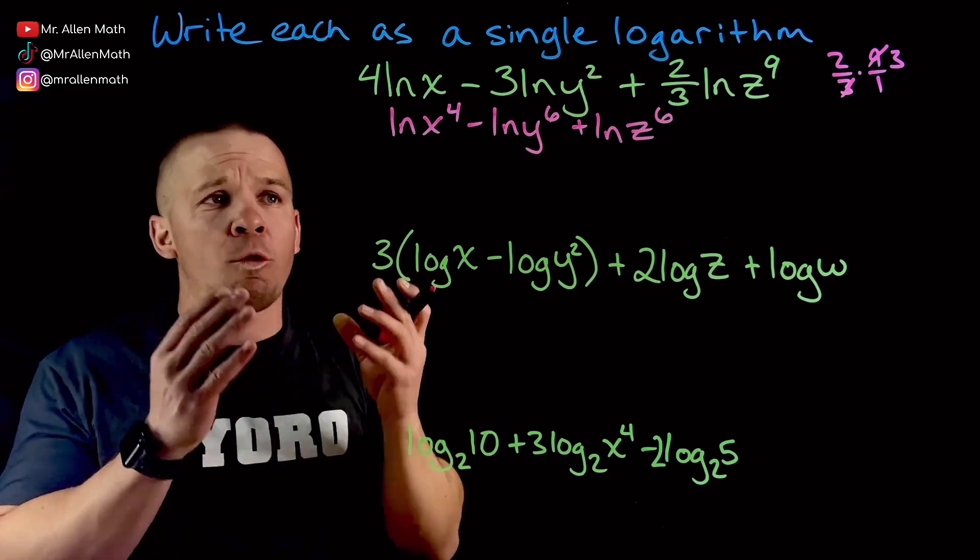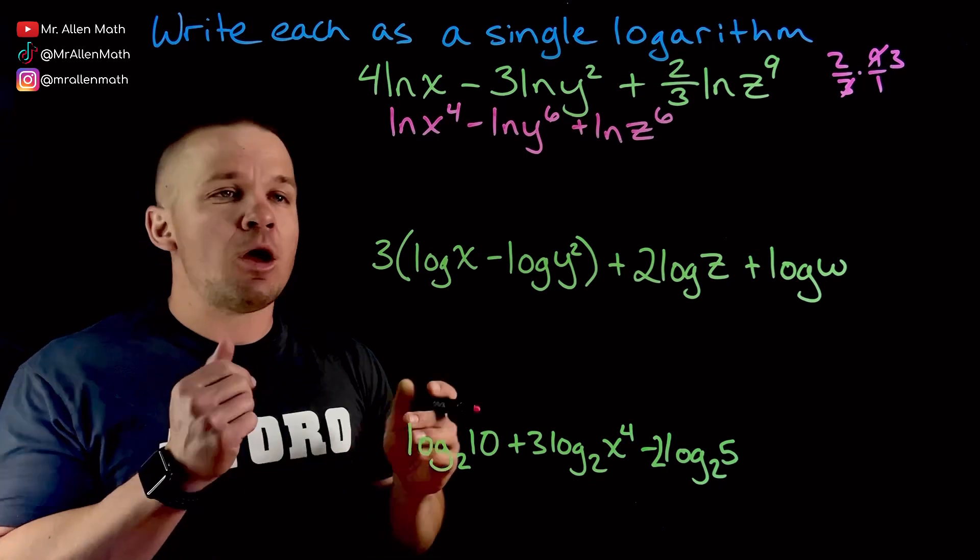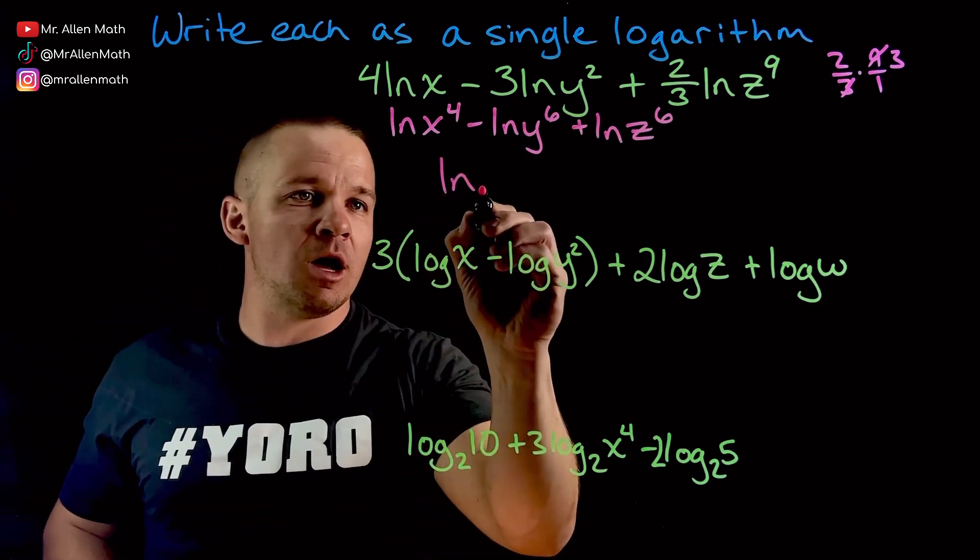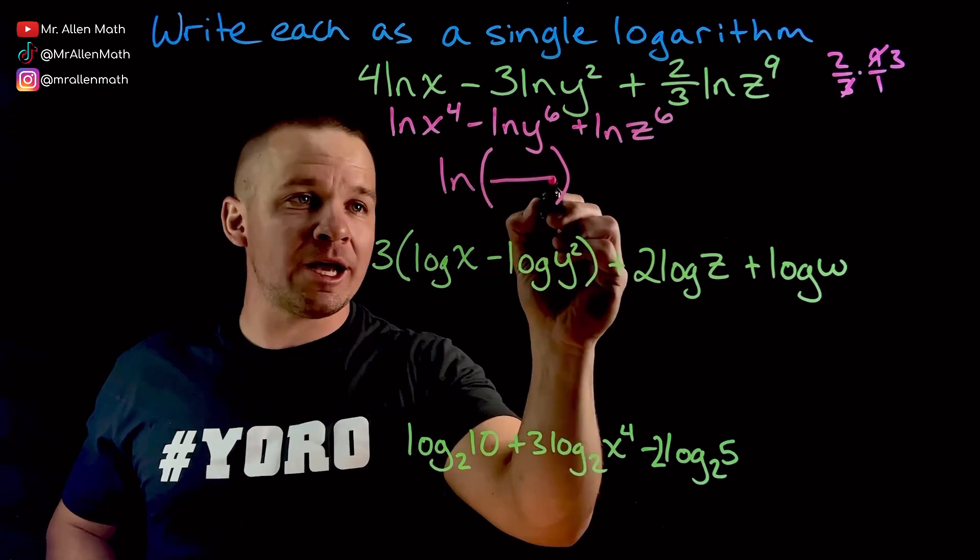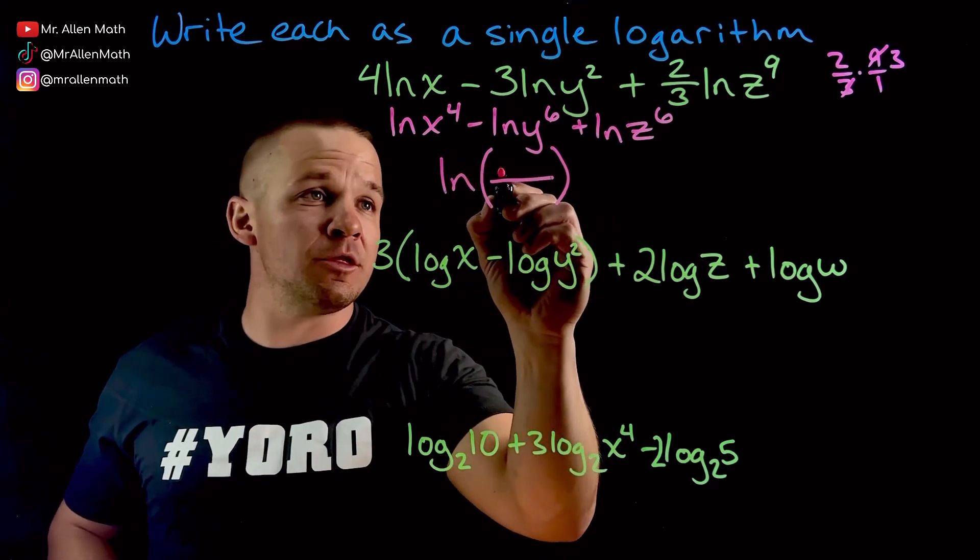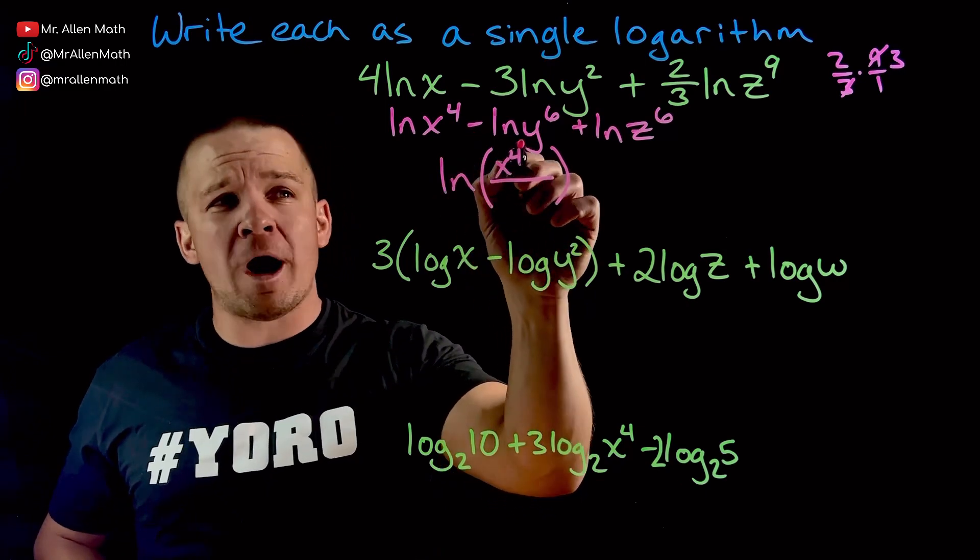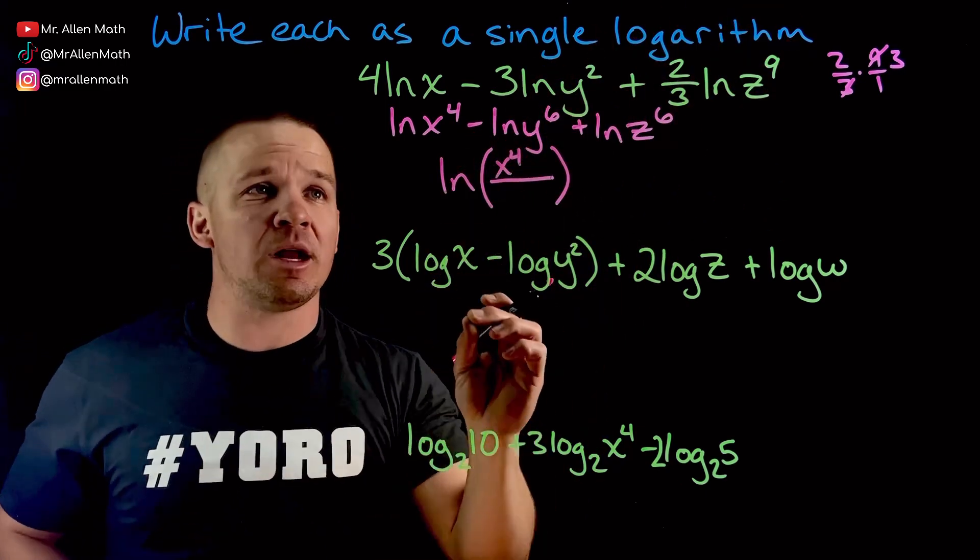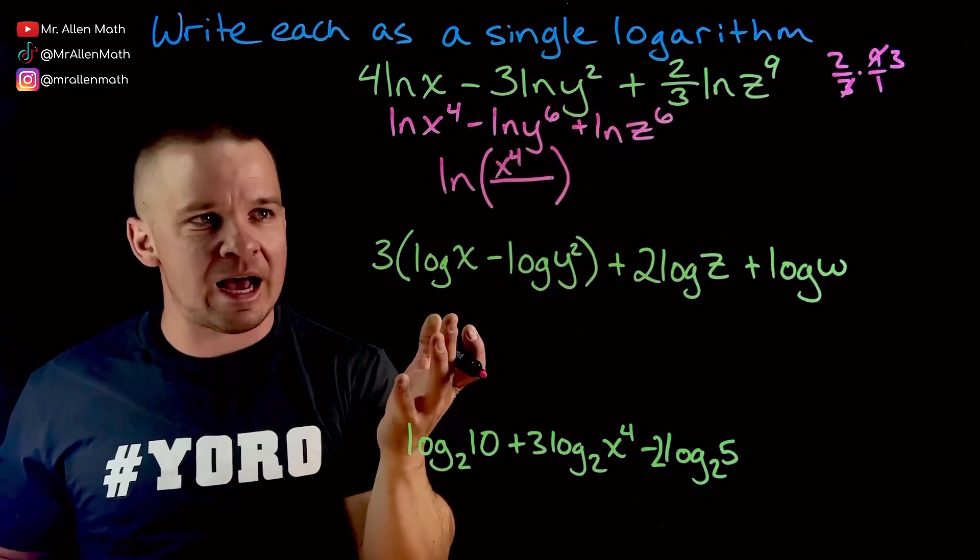Now, I can put this into one single logarithm. Since there's subtraction, I know there's going to be division, so I'm going to have natural log of, and I'll put a big old parenthesis here with a fraction. We're going to have x to the fourth in the numerator, x raised to the fourth. I'm going to be subtracting natural log of y to the sixth, so that's going to go down to the denominator. Had I brought that negative up with it, it'd be a negative exponent. How do I make it positive? Bring it to the denominator.